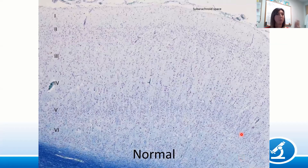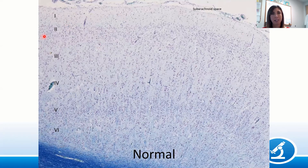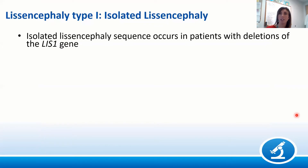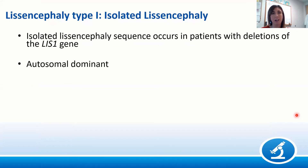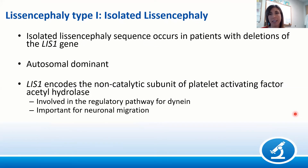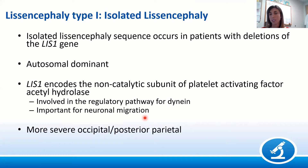Here is an example of normal hexalaminar cortex for comparison — layer 1 hypocellular, layers 2-6 showing pyramidal cells of varying sizes. For isolated lissencephaly due to LIS1, the gene encodes a non-catalytic subunit of platelet-activating factor acetylhydrolase, important in the regulatory pathway for dynein — a microtubule-associated protein critical for neuronal migration. This causes a four-layer cortex with more severe abnormalities in the posterior aspects.